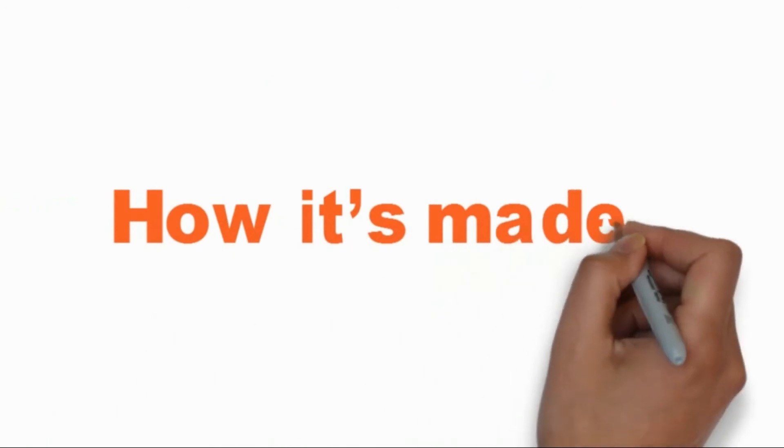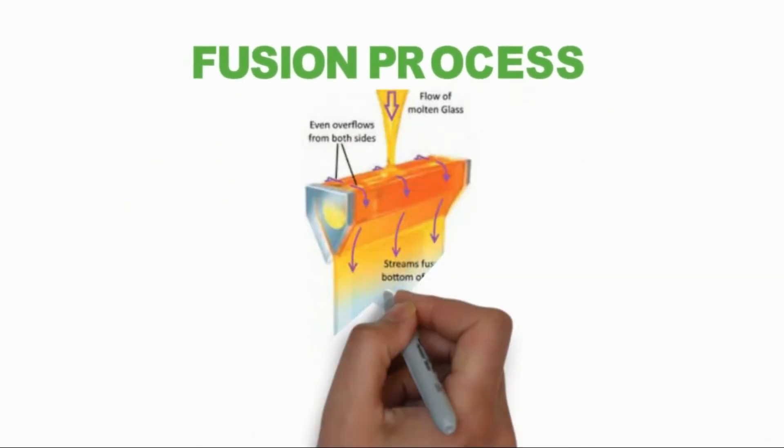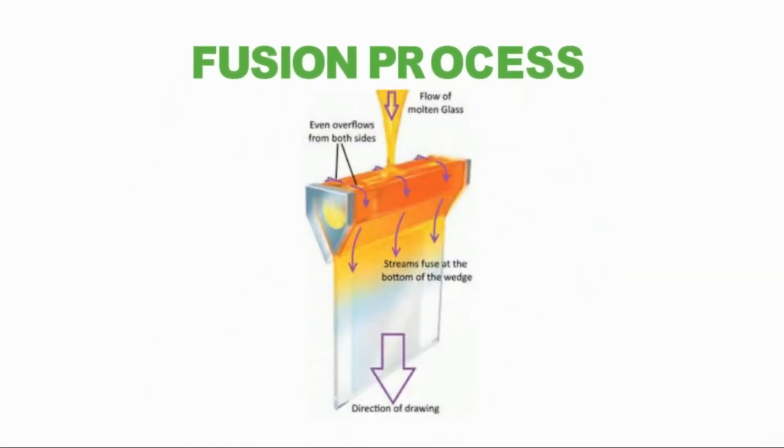How It's Made. Fusion Process. The process begins when raw materials are blended into a glass composition, which is melted and conditioned. The molten glass is fed into a trough called an isopipe, overfilling until the glass flows evenly over both sides.